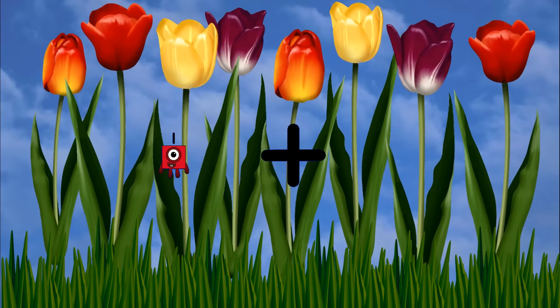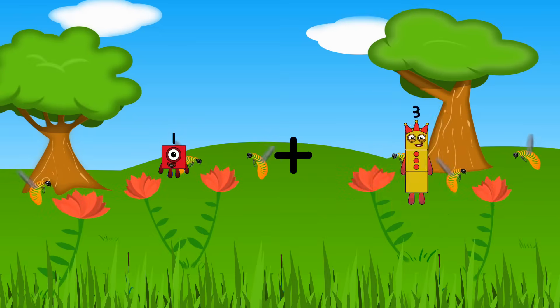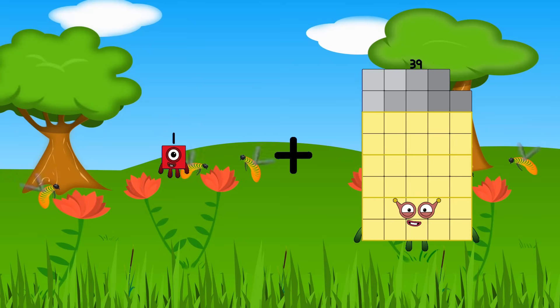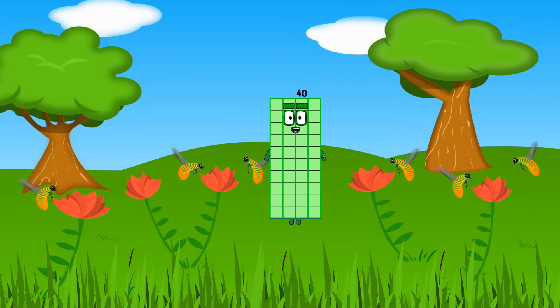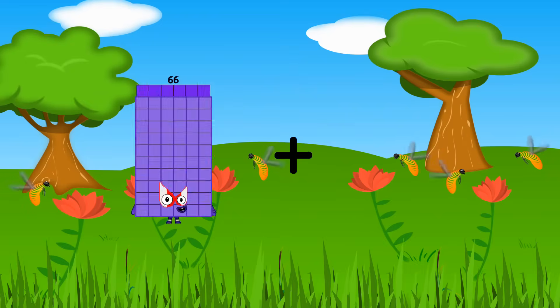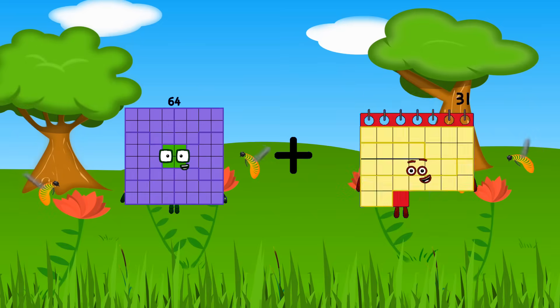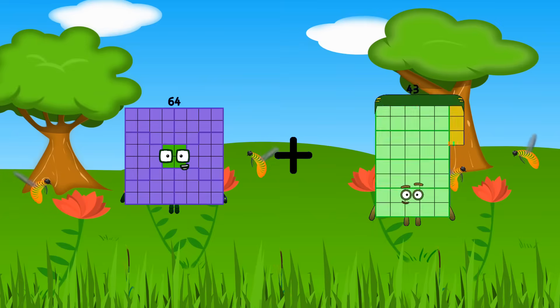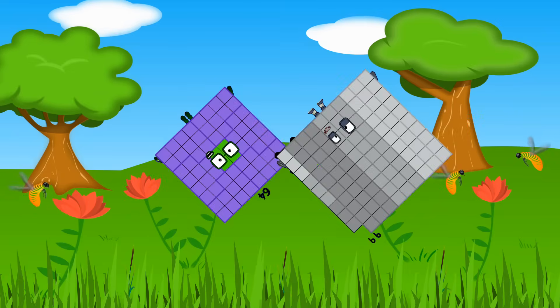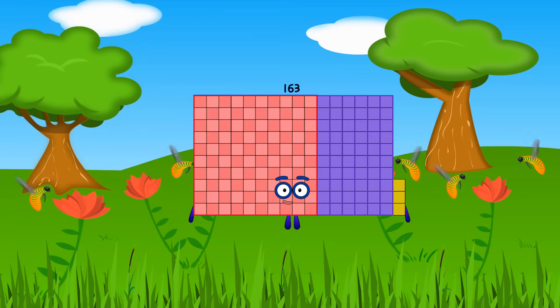One plus thirty-nine equals forty. Sixty-four plus ninety-nine equals one hundred sixty-three.